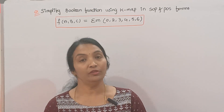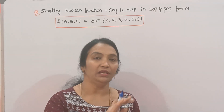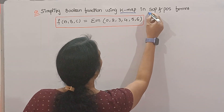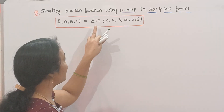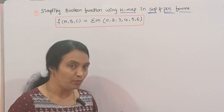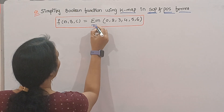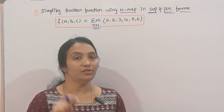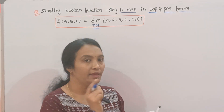I am going to show you 3 and more videos on how to simplify the Boolean function using Kmap, in both SOP and POS forms. If the sum is given, the Min Terms will be given in SOP. If you have given the POS, the max terms will be given in POS, as Pi of M. Then the POS simplification will be given.